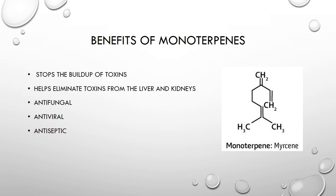The first type of hydrocarbon that essential oils are made from is monoterpenes. Some of the benefits of monoterpenes include: they stop the buildup of toxins, help eliminate toxins from the liver and kidneys, and they're antifungal, antiviral, and antiseptic. This picture is an example of a monoterpene found in an essential oil.